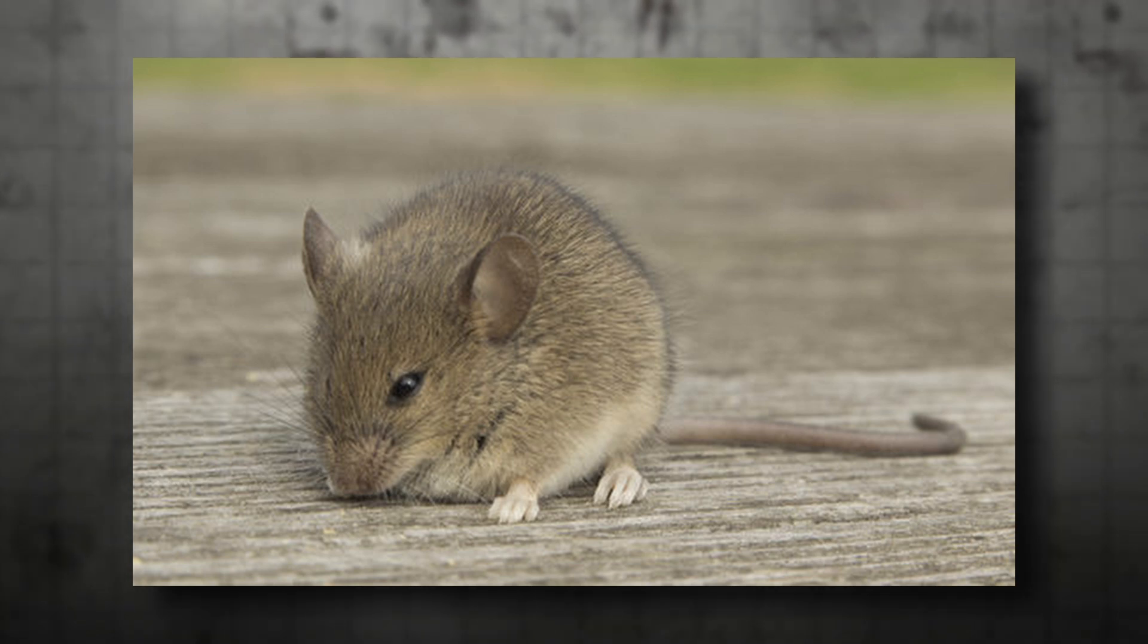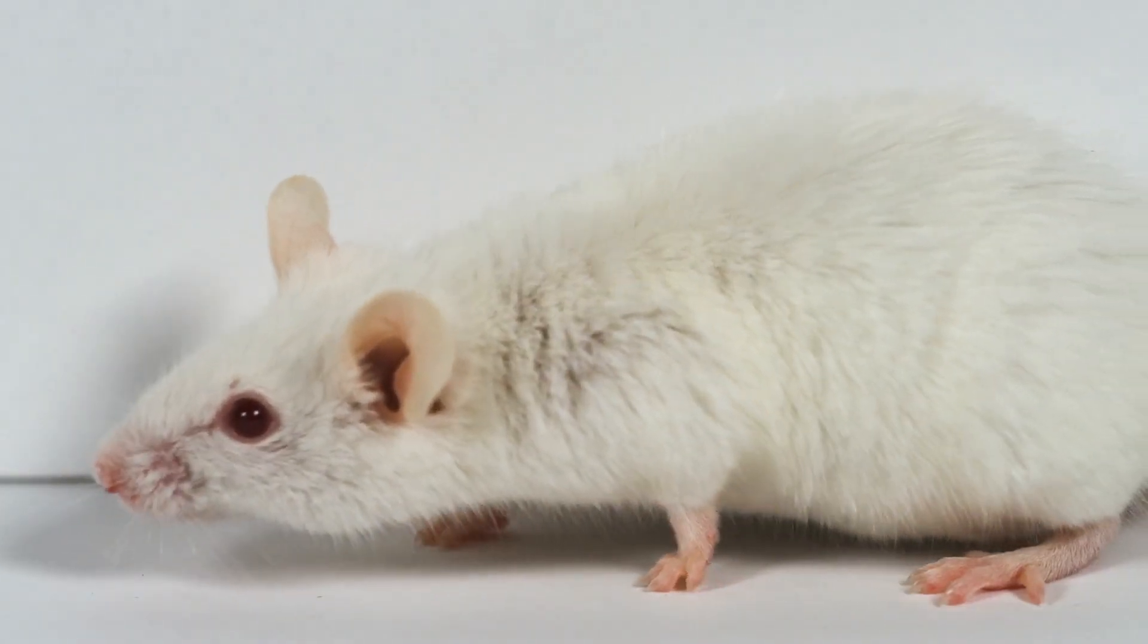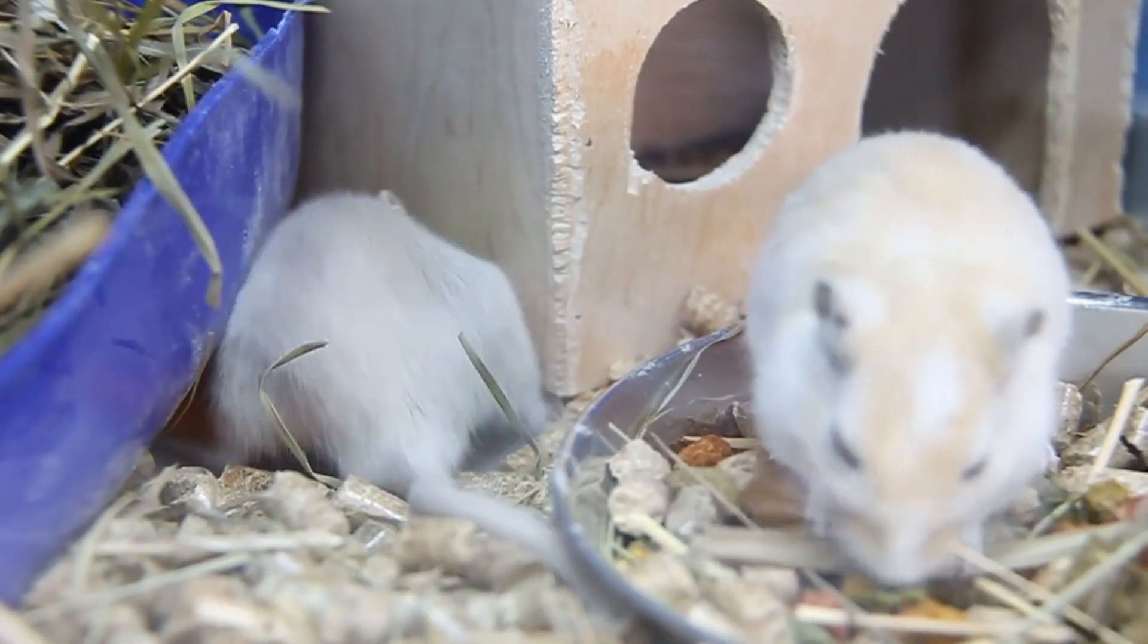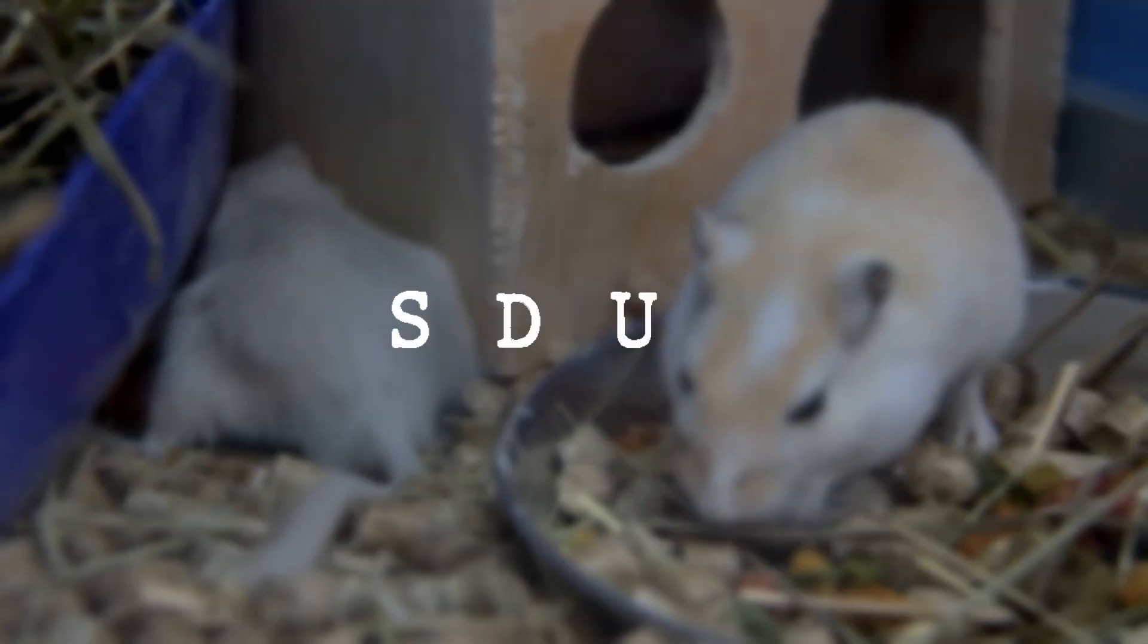When mouse pups carrying the humanized NOVA1 variant called for their mothers, their squeaks were higher-pitched and structurally different from their wild-type counterparts. Researchers categorized mouse vocalizations into four distinct letters: S, D, U, and M.